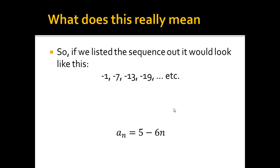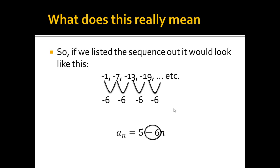So if we listed the sequence out, it would look like this: negative 1, negative 7, negative 13, negative 19, and so on. We should start to notice a pattern. From negative 1 to negative 7, I'm subtracting 6. From negative 7 to negative 13, I'm subtracting 6. This makes sense because this is an arithmetic sequence, which means I should be adding or subtracting the same amount each time. I can see that minus 6 right there in the equation.